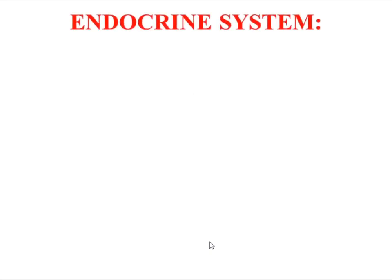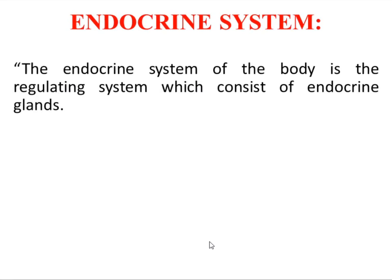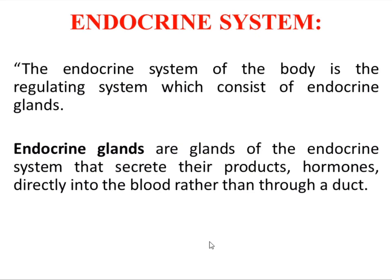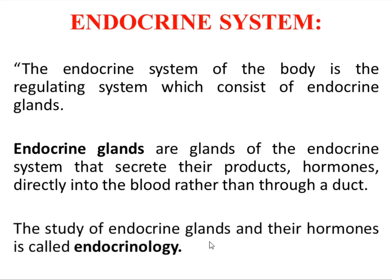The topic we are going to start today is the chemical messenger. First we will define the endocrine system. The endocrine system of the body is a regulating system which consists of endocrine glands. These are the glands that secrete their products, which may be hormones, directly into the blood rather than through a duct. Glands which secrete their products through ducts are called exocrine glands. The study of the endocrine glands and their hormones is called endocrinology.